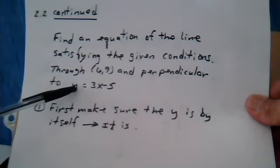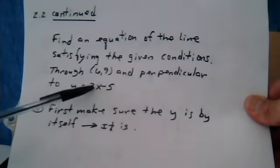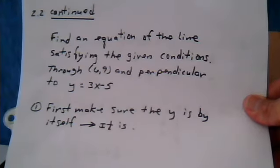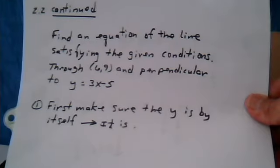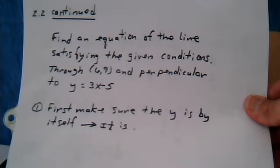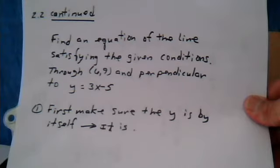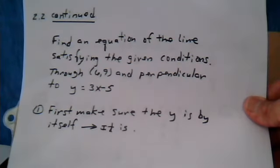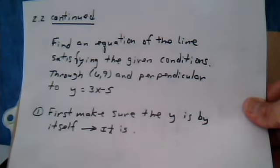Once the y is by itself, the number next to the x is the slope. If the y is not by itself, then you need to use algebra to get it by itself. And then once you have the y solved for, the number next to the x would be the slope.